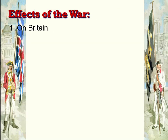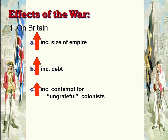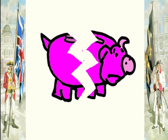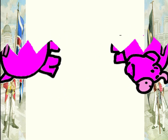The last bits are the effects on different groups of people. For the British: they now have an increased size of the empire, they have a lot of debt because war is expensive, and they're seeing that these colonists are ungrateful and not appreciative of what the British are doing for them. All these things together mean they should reorganize the empire. Since they're in debt, the piggy bank is totally broken — and someone has to pay for this war.